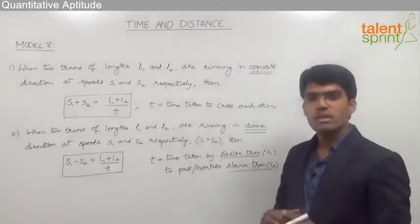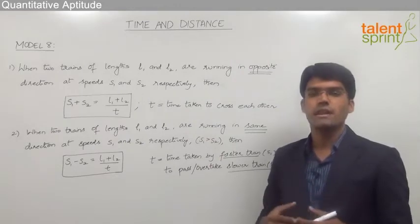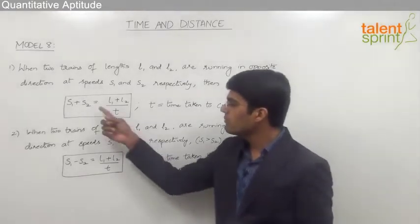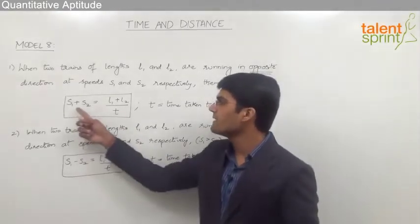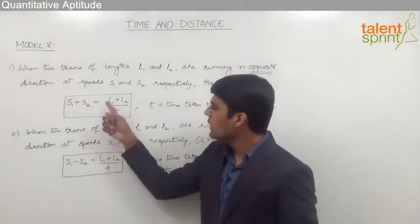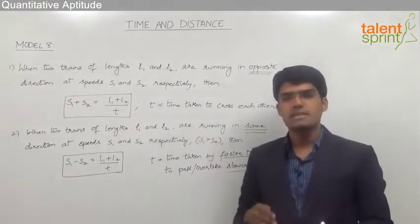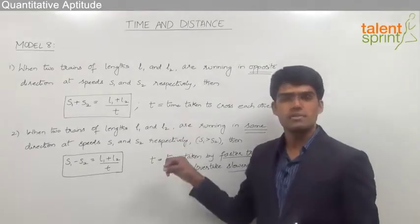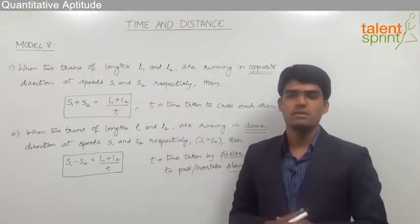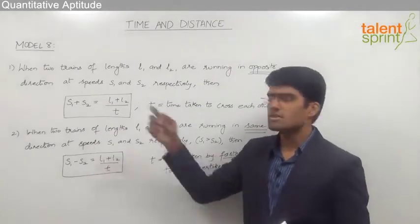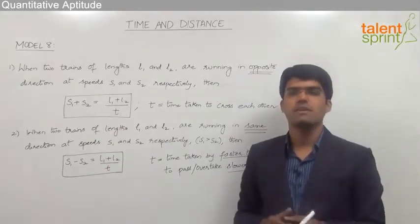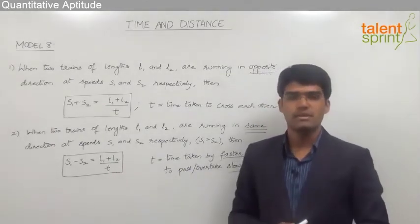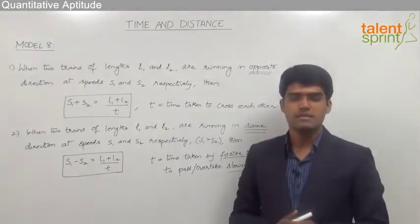With these two equations we can solve questions related to two trains moving in opposite direction or same direction. In both equations we have five variables: S1, S2, L1, L2 and T. Any four will be given in the question and we simply substitute the values at the right places to find the fifth one. Remember, before doing the calculation we must balance the units on both sides — either completely in kilometers per hour or in meters per second.